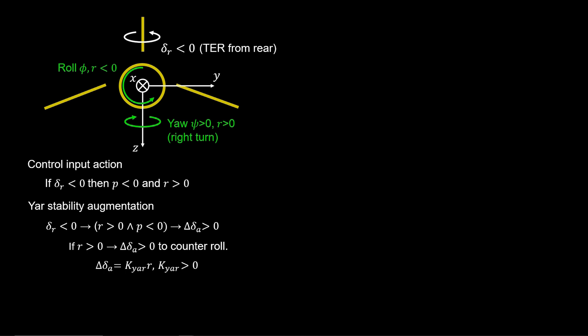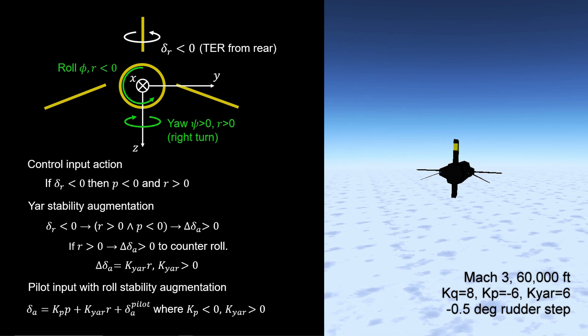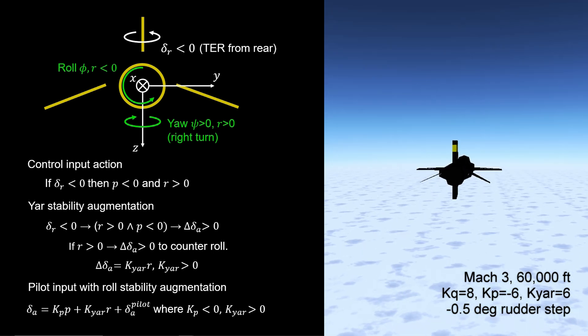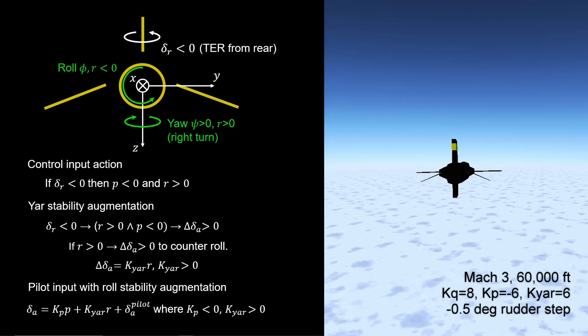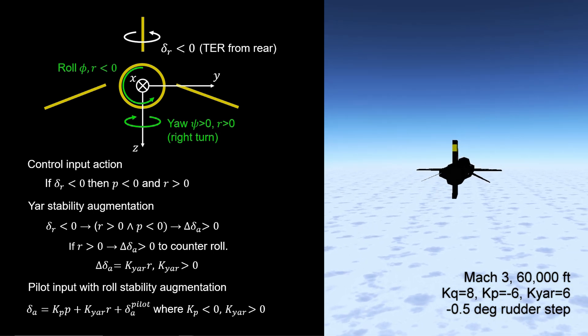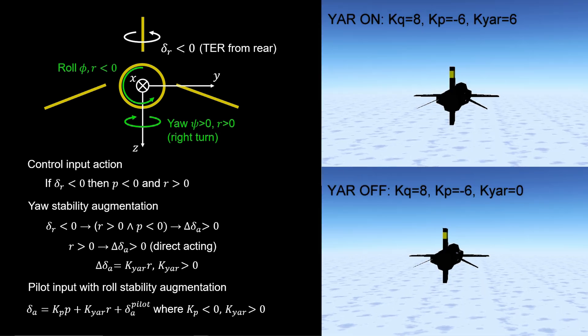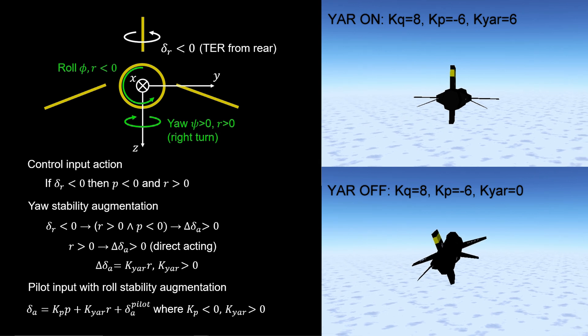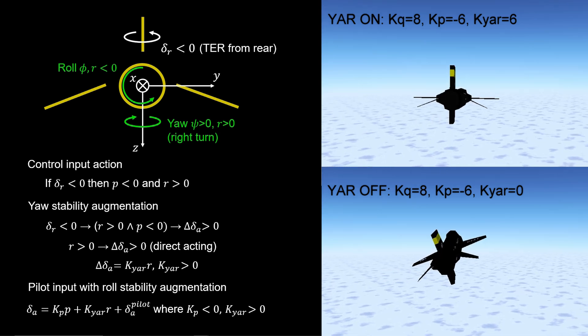Now, the total aileron command to the control actuation system has a negative feedback term on roll rate, a positive feedback term on yaw rate, and of course the aileron command from the stick. We can see yaw control is quite effective in decoupling roll from the yaw command input.